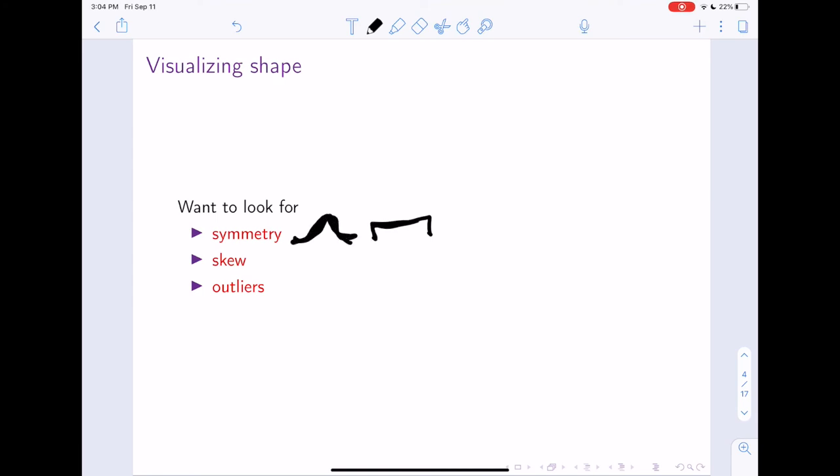Or is it just in general symmetric? It could be symmetric like this, where it looks like a rectangle. It could also be symmetric like this, where it has these two humps. So we're interested in symmetry.